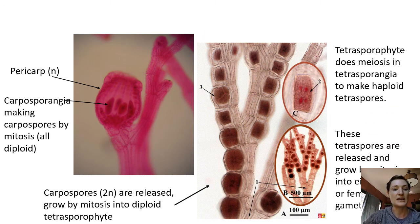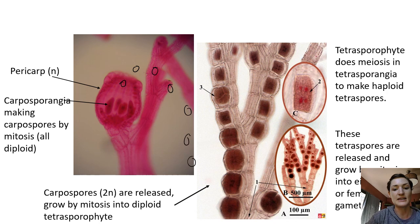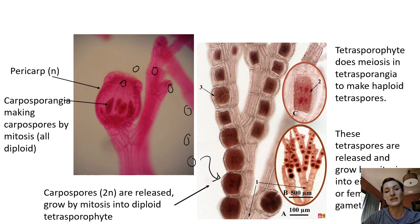That carposporophyte is going to make carpospores that it releases. Here's our little carpospores. They're diploid. They're going to land and grow into tetrasporophytes. So each of these can be a new organism that undergoes meiosis and increases our genetic variation and survivability. Those carpospores land and grow into a diploid tetrasporophyte which has branches. And in each cell of those branches, it is going to have tetrasporangia that are diploid that then undergo meiosis to make four haploid tetraspores.